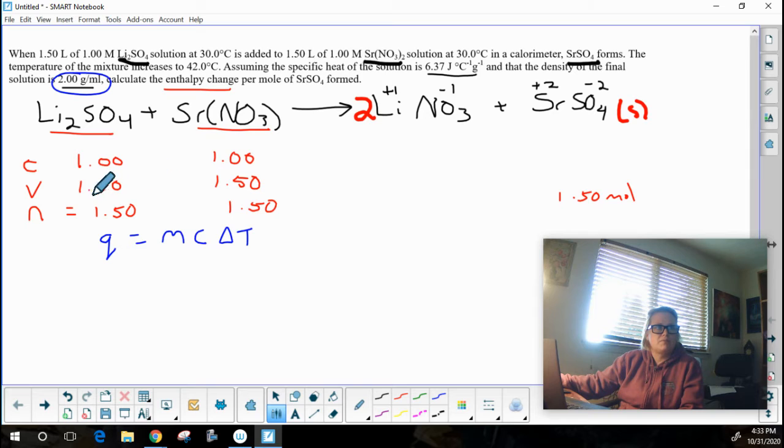So I'm looking at my volumes here. If I add those two volumes of liquid together, because I'm putting them both in the cup, I'm going to have 3 liters or 3,000 milliliters.